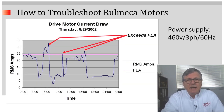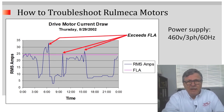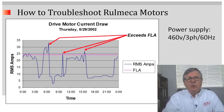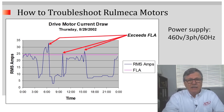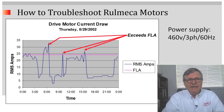Remember the example presented previously — a 20 horsepower motorized pulley driving a conveyor with a full load amp rating of 23.6 amps. This is an actual example of a conveyor being driven by a 20 horsepower motorized pulley over a 24-hour period a few years ago. Notice that it exceeded full load amps several times in that 24-hour period.